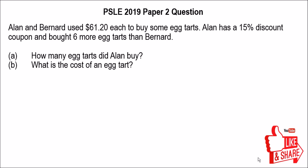Alright, let's read the question. Alan and Bernard used $61.20 each to buy some egg tarts. Alan has a 15% discount coupon and bought 6 more egg tarts than Bernard. So how many egg tarts did Alan buy, and what is the cost of an egg tart? If you notice carefully, both of them spent $61.20 each, but Alan was able to buy 6 more egg tarts because of the 15% discount.